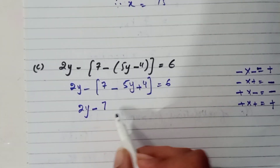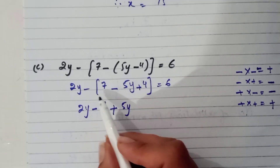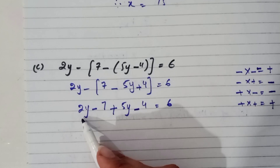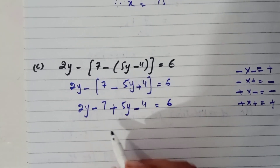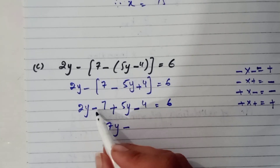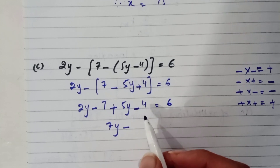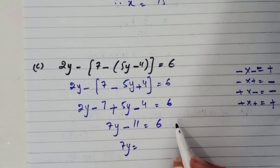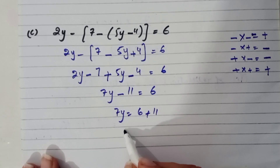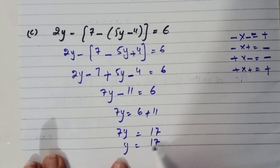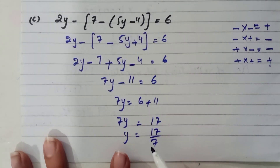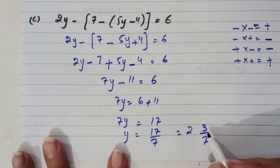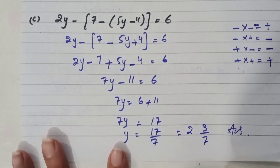We get 2y minus 7, and minus times minus gives positive. Negative 5 gives a minus sign, and 4 gives 6. By adding 5 to 2 we get 7y. Both sides have negative signs so we add those values: 7, 8, 9, 10, 11 giving 6. Changing position: 6 plus 11 equals 17, so y equals 17 over 7. As a mixed number: 7 into 14, remainder 3, giving 2 and 3/7. That is the answer of part c.